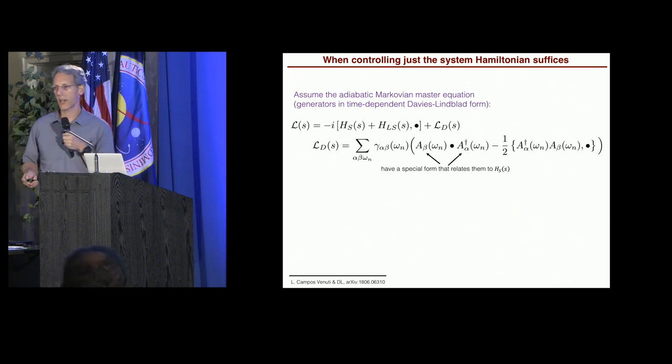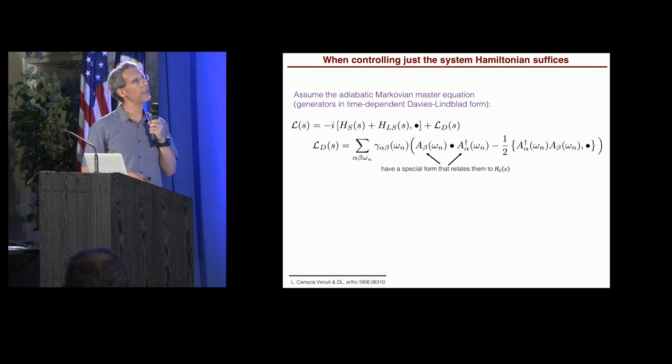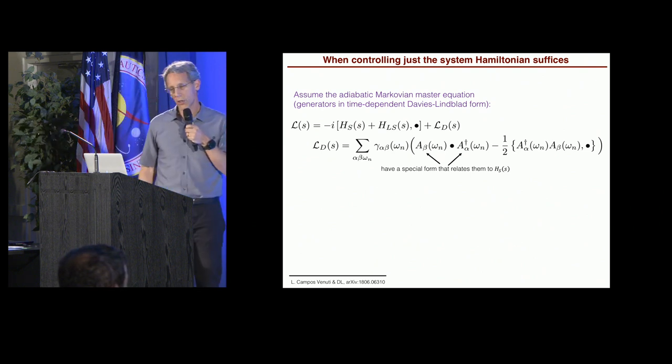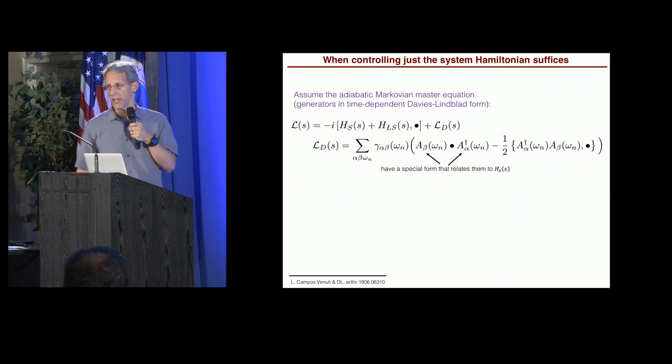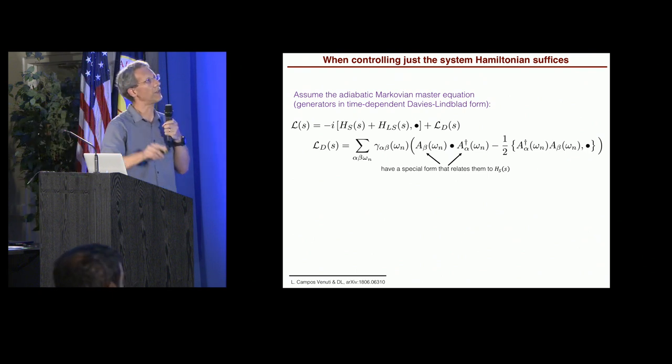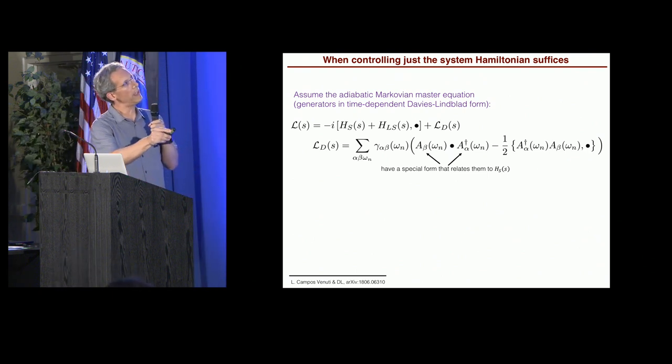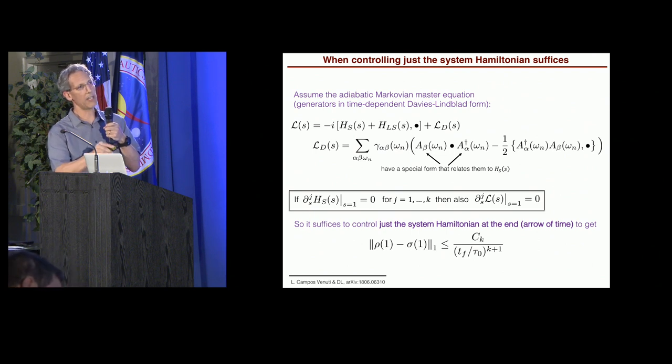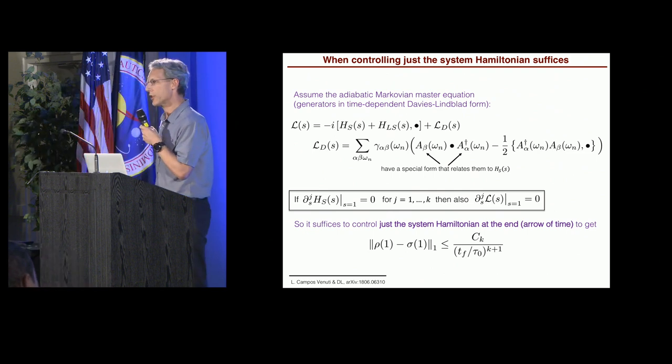So there is a very fortunate circumstance where it turns out that insisting a condition on the Liouvillian actually is only equivalent to insisting on a condition on the Hamiltonian. And this is for the physically relevant setting of having a time-dependent Davies-Lindblad-type master equation, Markovian master equation. So this is the Lindblad master equation, which I'm assuming is everything here is time-dependent, written in this particular form due to Davies, which is the physical way of deriving the master equation. So this is kind of the canonical form here.